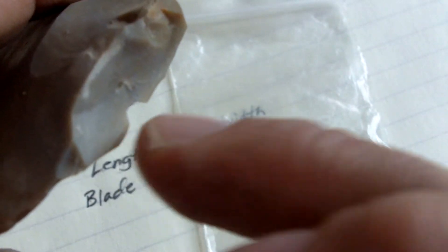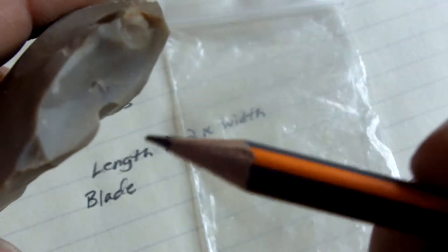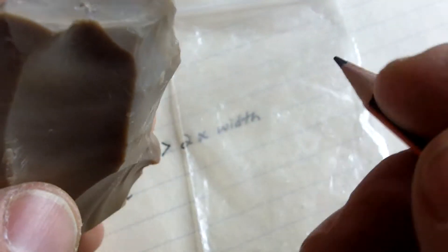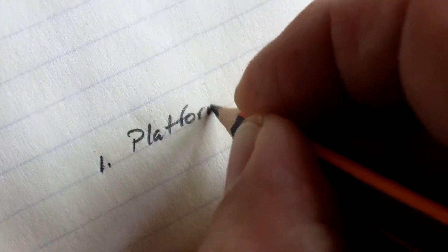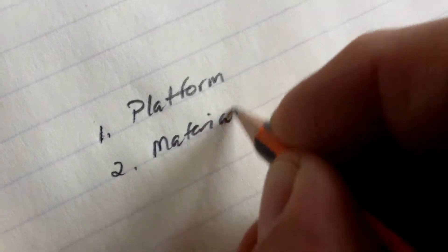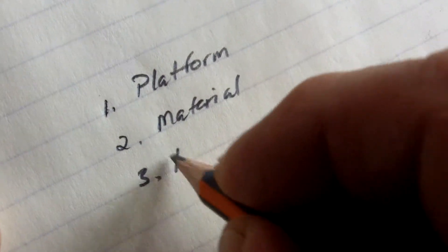Okay. So again, if you don't have a stout platform, or a meaty platform, or a platform that can handle it, you're really not going to get a long flake on most material. So I'll just go over a few points here. The most important thing, I think, is the platform. Two is the material. And three is your tool.